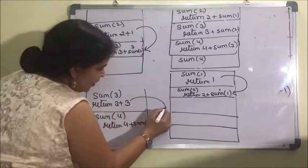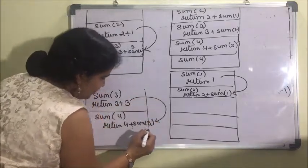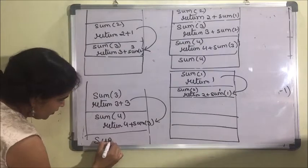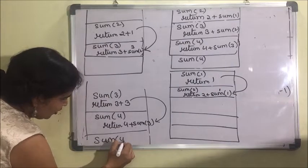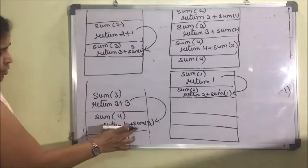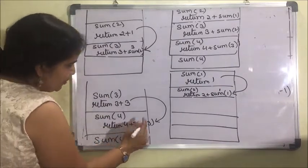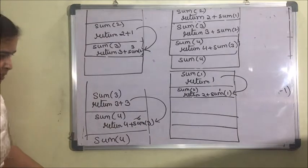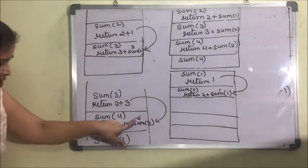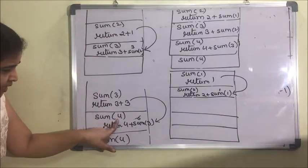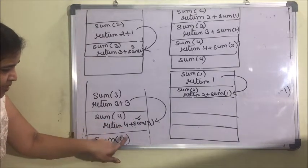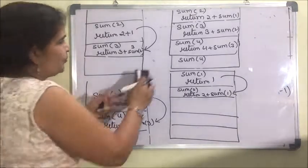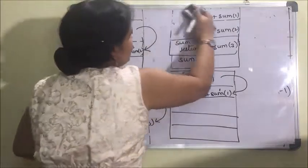This control is passed to sum(4). Sum(3) is now replaced by 6. This passes control back.